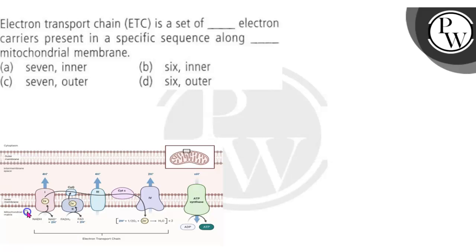Hello children, let's move to the question. The question here is: Electron transport chain is a set of blank electron carriers present in a specific sequence along blank mitochondrial membrane.